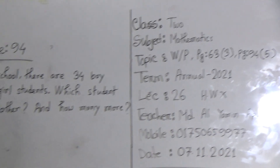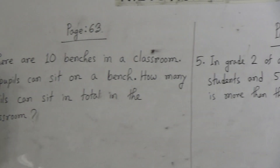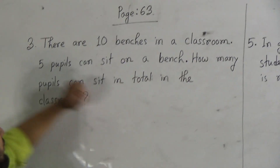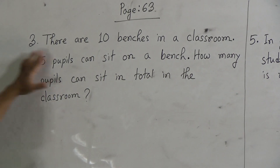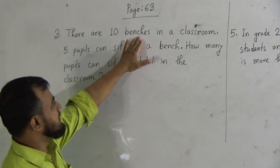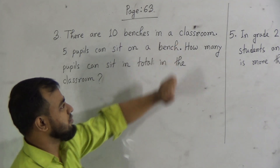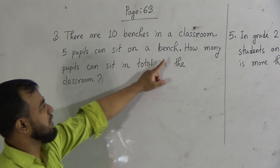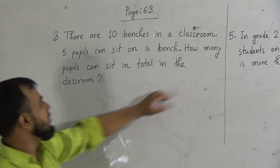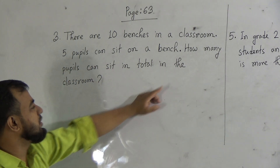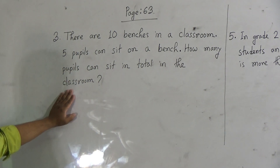Now look at the board. I have written down question number 3 from page number 63 already. The question is: there are 10 benches in a classroom. 5 people can sit on a bench. How many people can sit in total in the classroom?